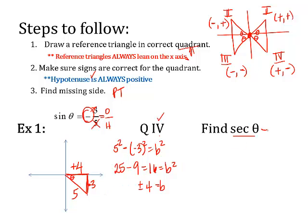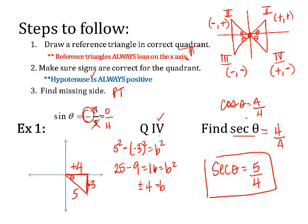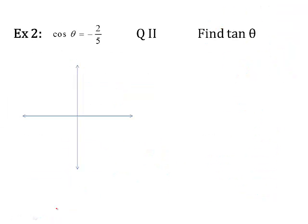When you take the square root, remember it's either positive or negative four. You have to decide which. We already decided that because it's in quadrant four, it has to be positive — so it's going to be positive four. Now, the goal is to find secant. Cosine is adjacent over hypotenuse, and secant is the reciprocal of cosine, so it's hypotenuse over adjacent. The hypotenuse is five, the adjacent side we found is positive four. So secant of theta equals five over four. Notice all the work it took to get there, by drawing the triangle and using the Pythagorean theorem and knowing the correct ratios.